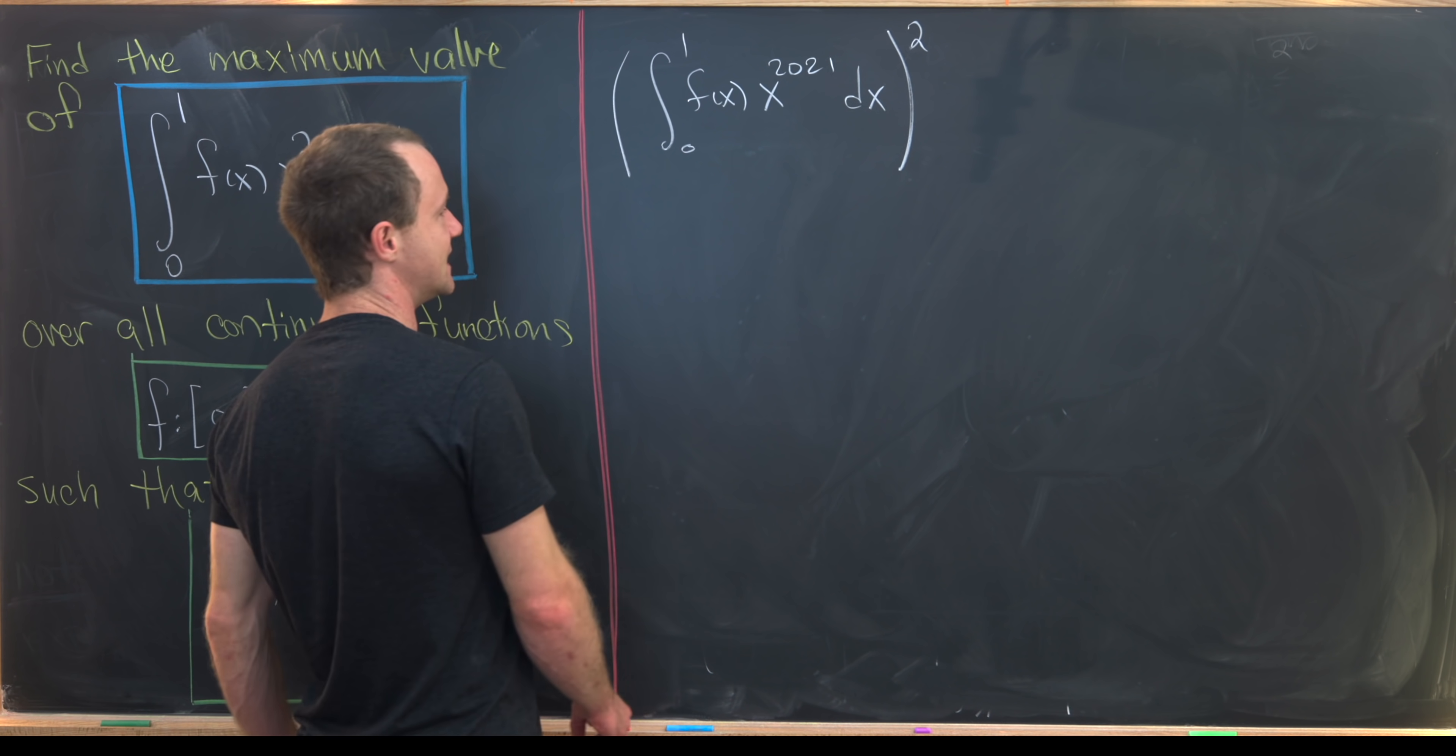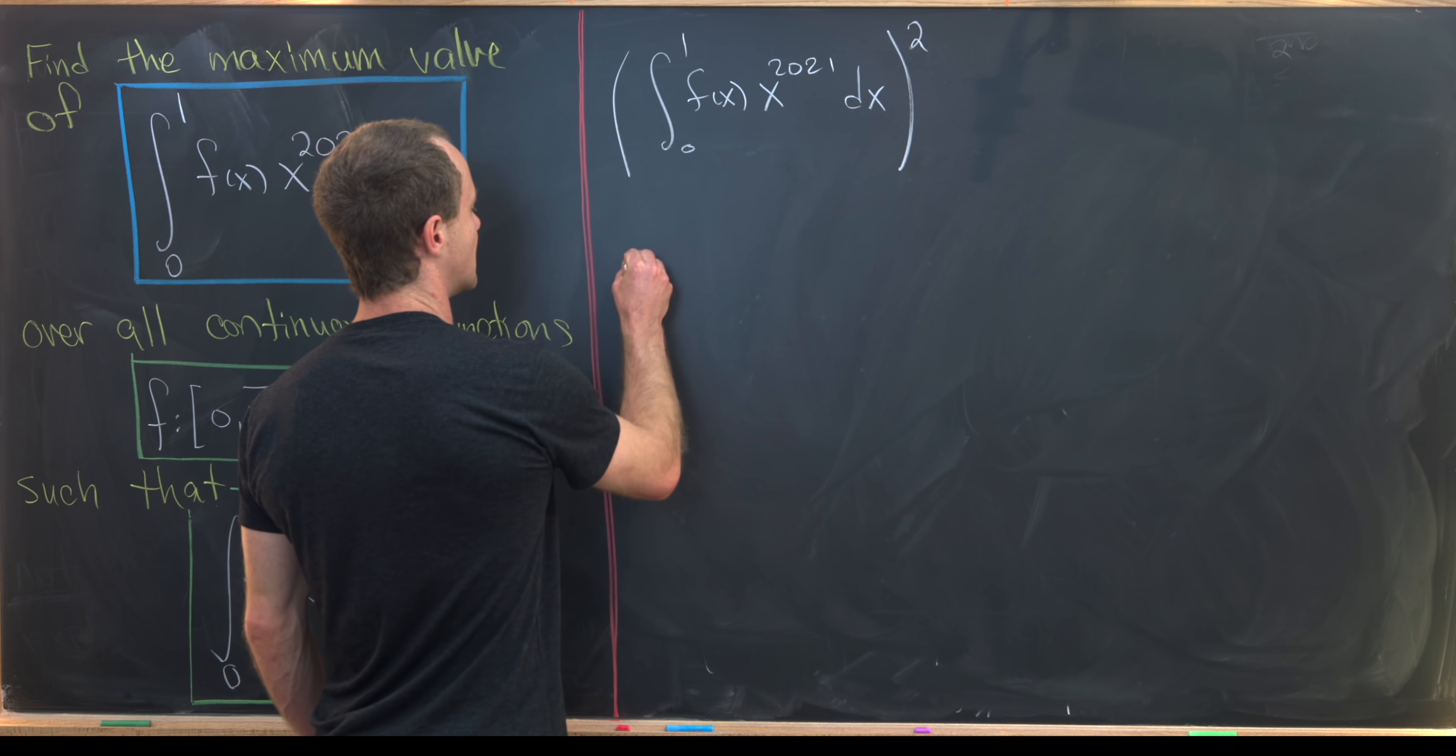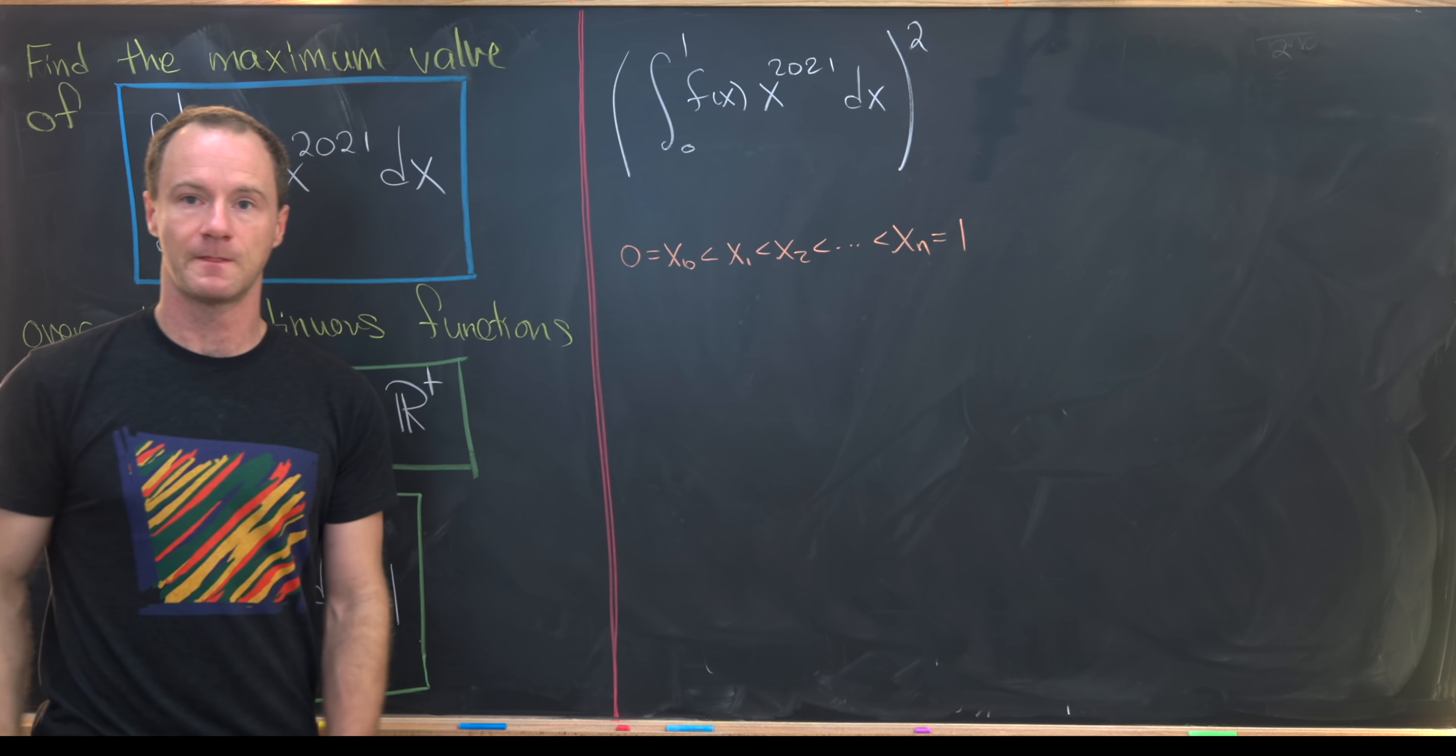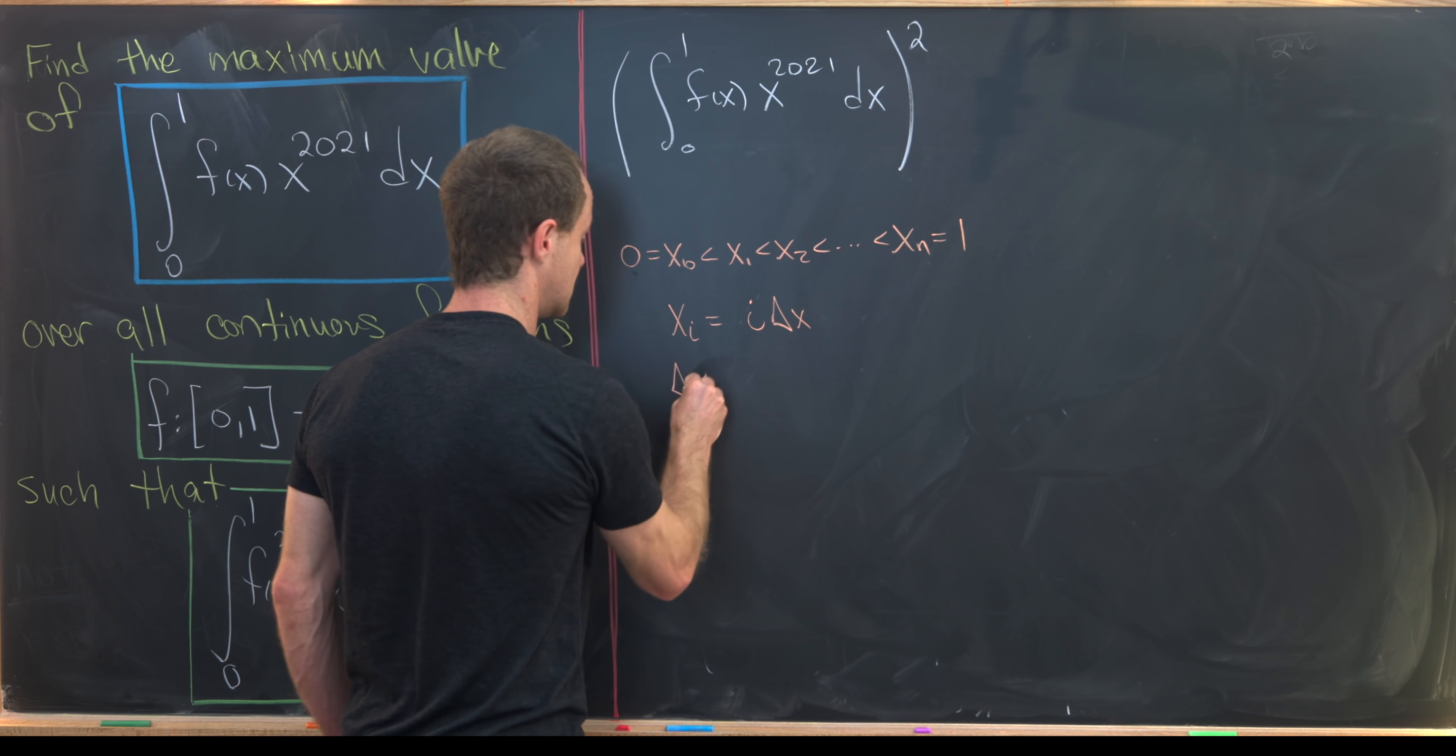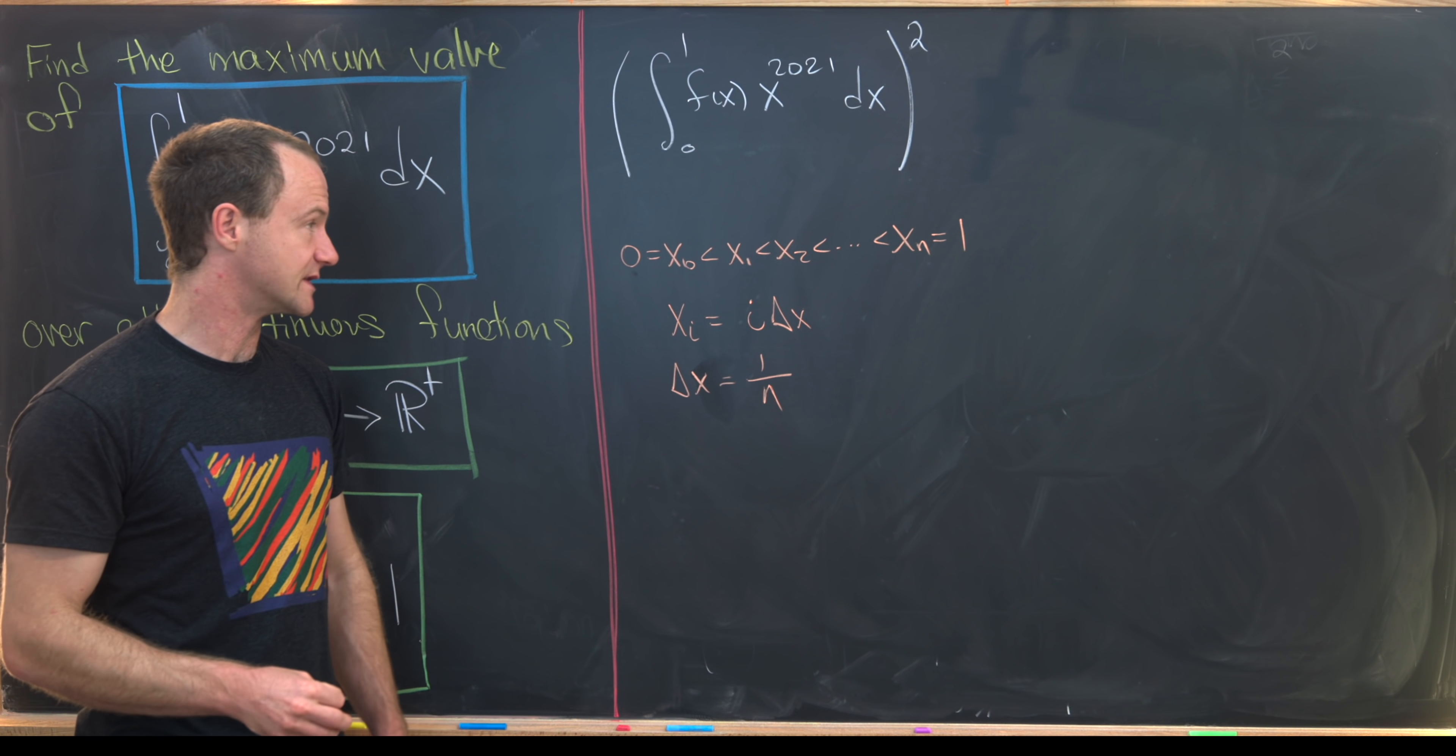The way I'll do that is pick some sort of partition of the interval 0 to 1. I'll call that partition x0 through xn. I've got 0, which is equal to x0, which is less than x1, which is less than x2, all the way up to xn, and that's equal to 1. Then xi equals 0 plus i times delta x, where delta x equals 1 over n. Those are the parts just built off of the construction method for a Riemann sum.